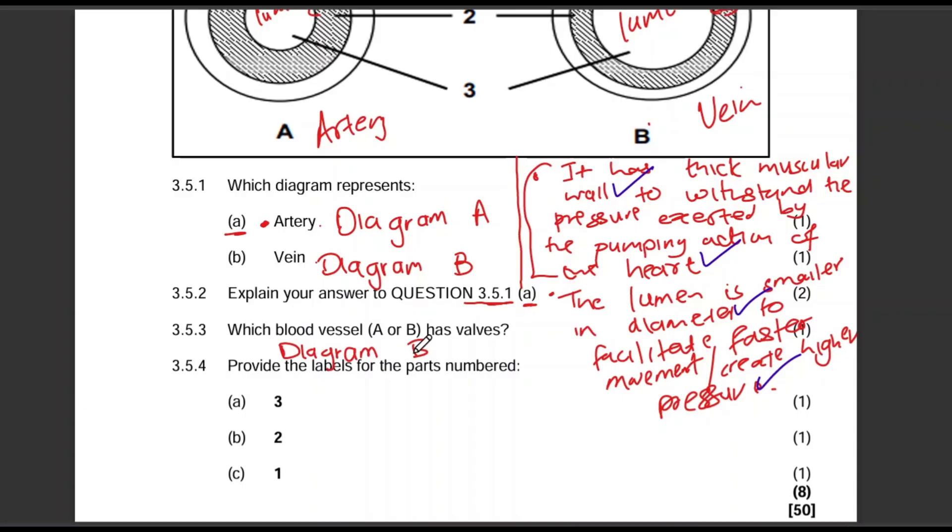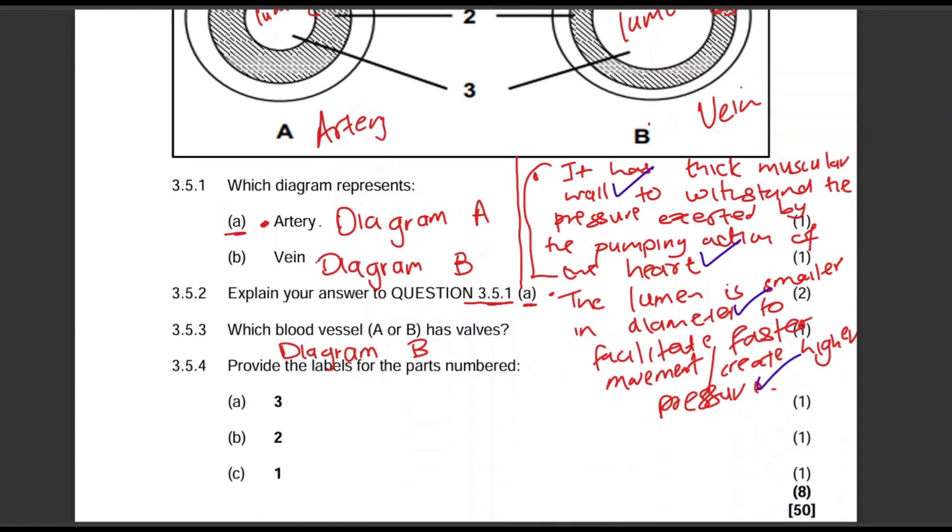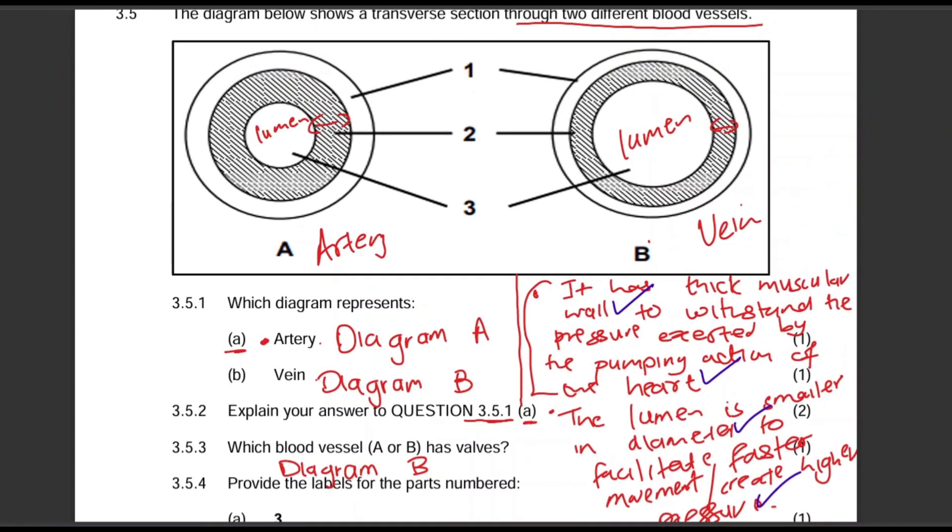Provide the label for the parts numbered three, two, and one. Let's look at them. So three, two, let's see. Three, two, and one. Okay. So three, we've identified it. That's the lumen. Then two, that's the muscle layer. And one. It's connective tissue.